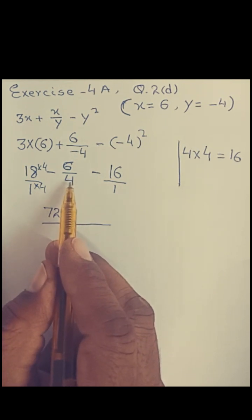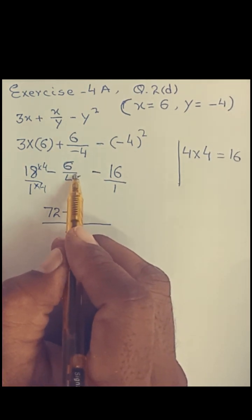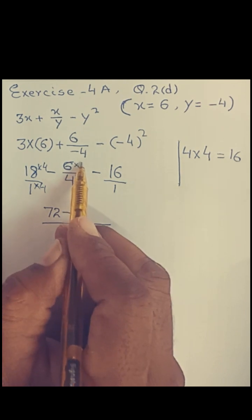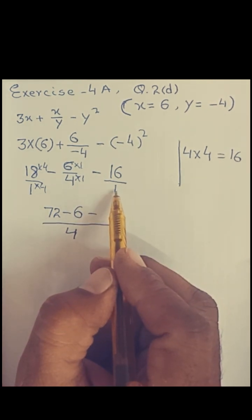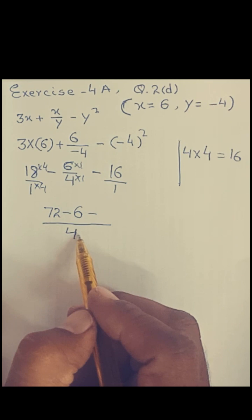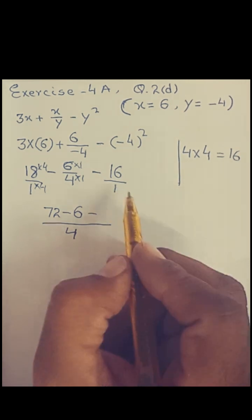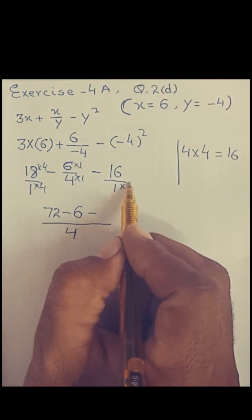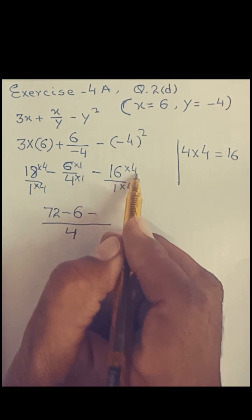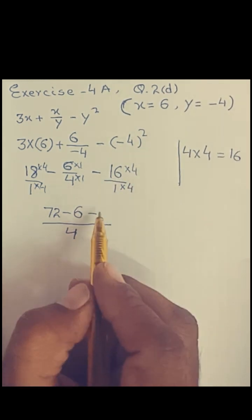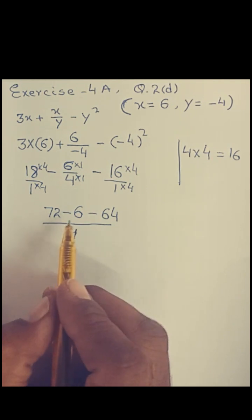For the 6 over 4 term: the denominator is already 4, so we multiply numerator and denominator by 1 — giving 6 over 4. For the 16 term: the denominator is 1, and 1 times 4 is 4, so we multiply the numerator 16 by 4, giving 64. Our expression is now: 72 over 4 minus 6 over 4 minus 64 over 4.